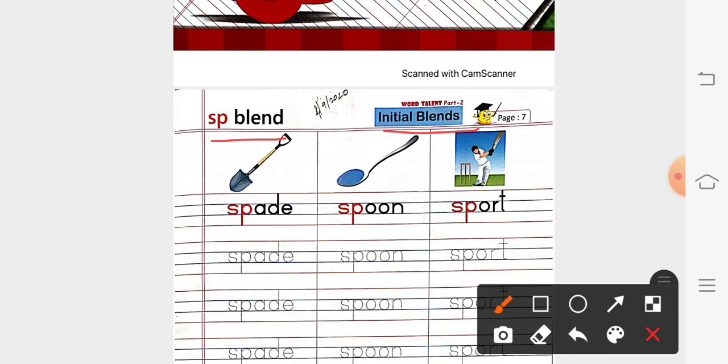The first one is Spade. Spade means that you can dig earth or sand. It helps you to dig. You know the Spoon. Spoon, you know how we eat lunch, dinner, breakfast. Then, there is sport. You know any of the sport which we play? That is our cricket, our badminton, football. That is our sport.